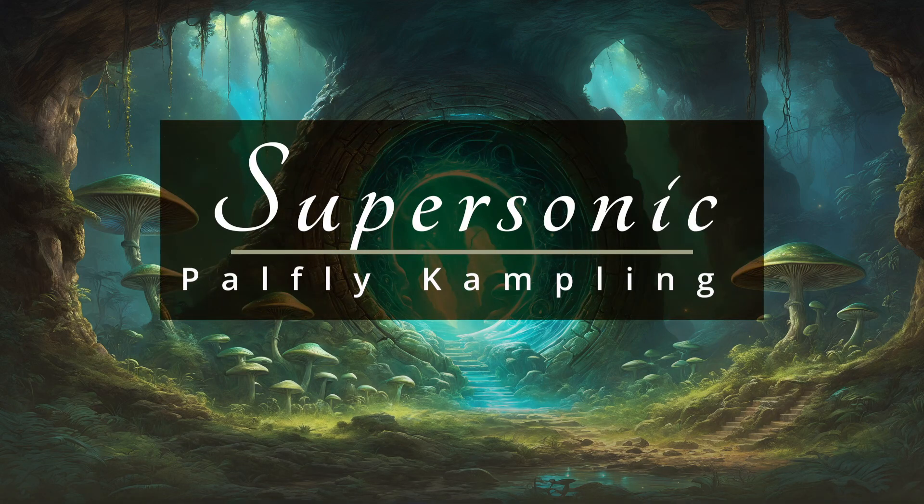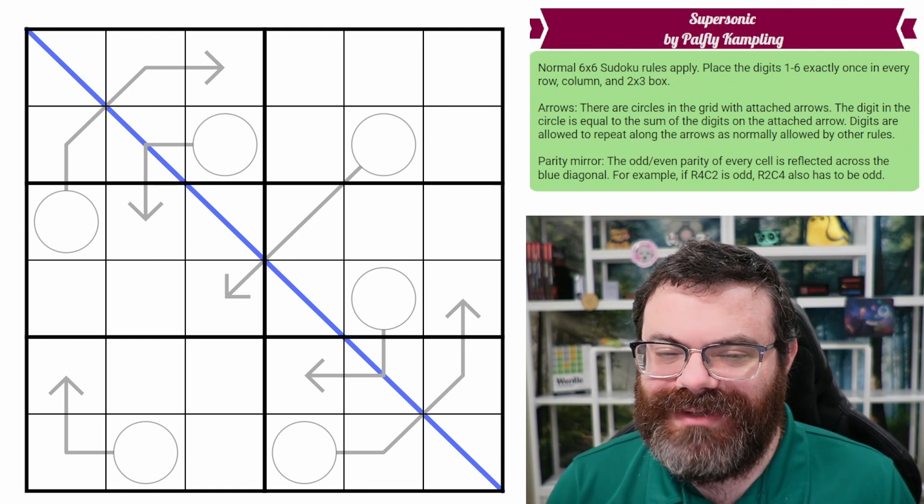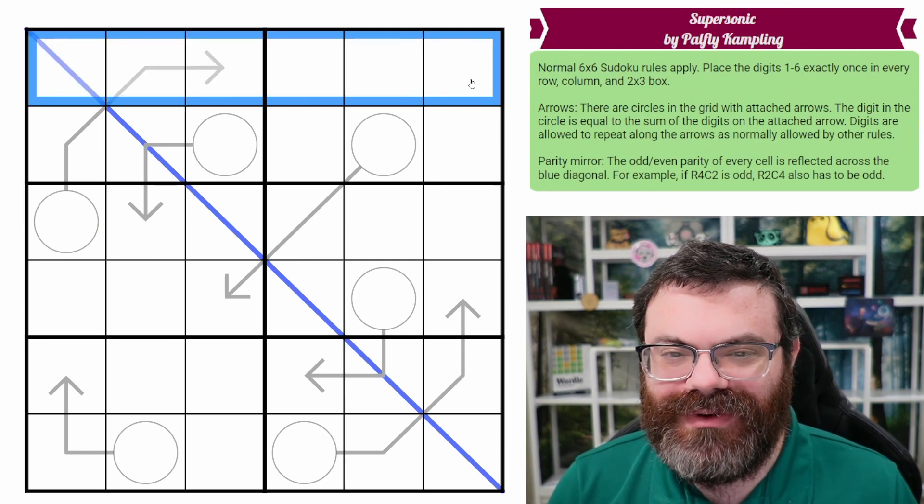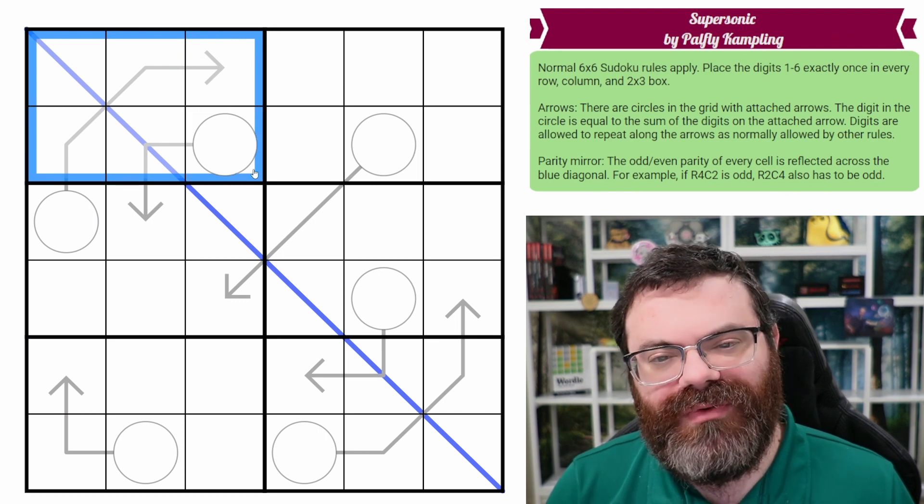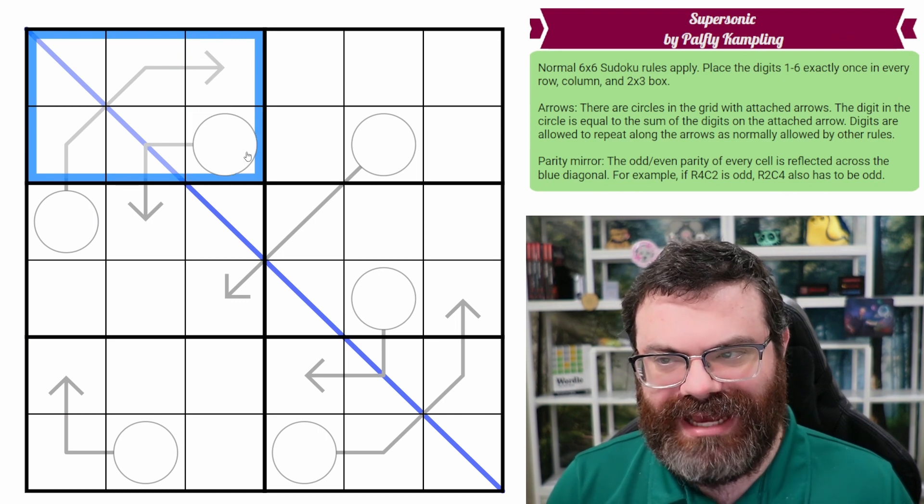Hello, let's continue our Sudoku adventure with Supersonic by PowFlyCampling. So we have normal 6x6 Sudoku rules. That means in every row, every column, and every 2x3 box, we are placing the digits 1 to 6 exactly once each.